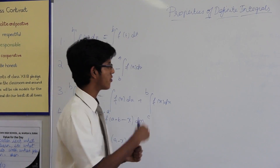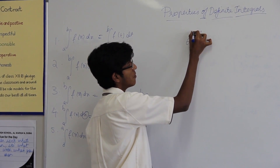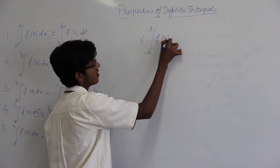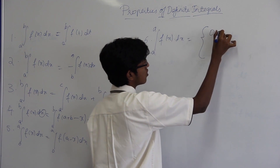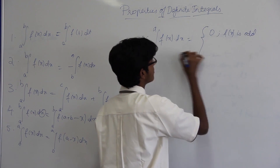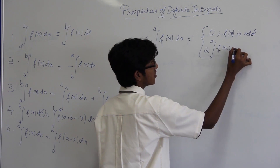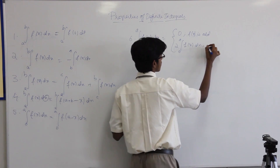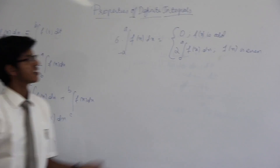The sixth property is quite different from the other five. When you integrate a function from minus a to positive a, there are two possible answers: it equals 0 when f of x is an odd function, and it equals 2 times the integral from 0 to a of f of x dx when f of x is an even function.